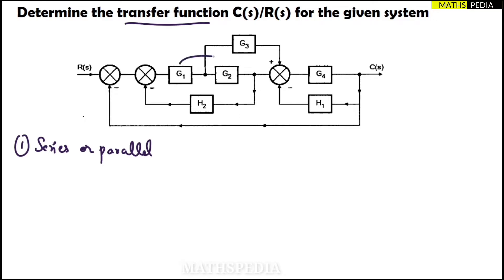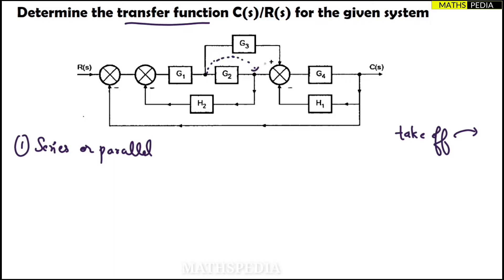These two blocks will be in series if I remove this takeoff point. To do that, I need to shift it — always try to shift the takeoff point towards the right side. So I'll shift this takeoff point towards the right side, and then I can say that these two blocks will be in series.